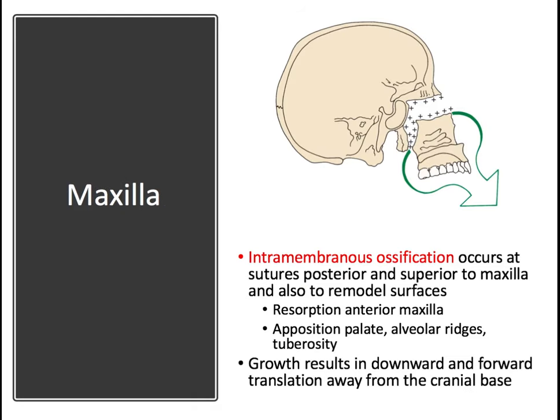The last high-yield fact is a general trend regarding the three planes of space — width, length, and height, more commonly referred to as transverse, anteroposterior (AP), and vertical. Generally, the transverse dimension stops growing first at around age 10 to 12, then AP at 14 to 16, and finally vertical at 18 to 20 or even later into adult life. There are exceptions, but this overarching trend drives many treatment decisions we'll cover later in the series.